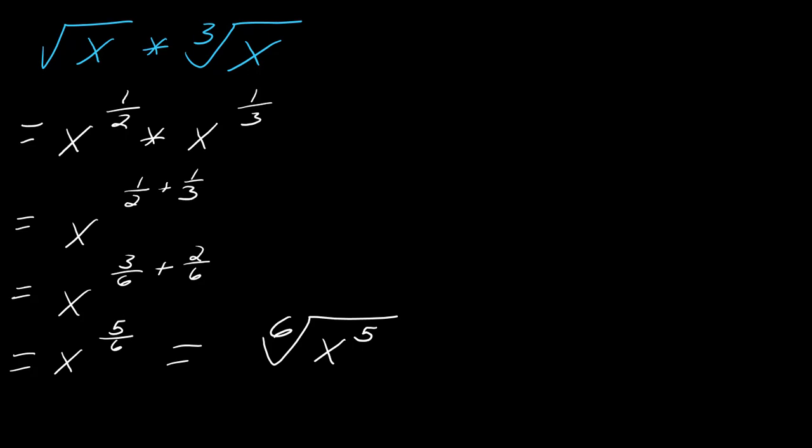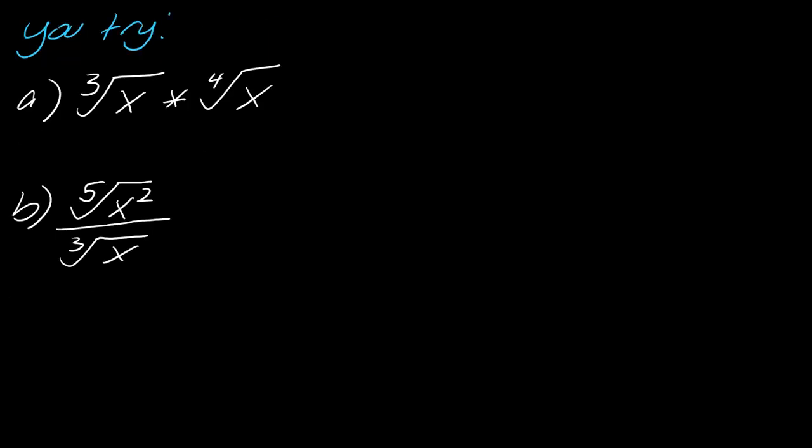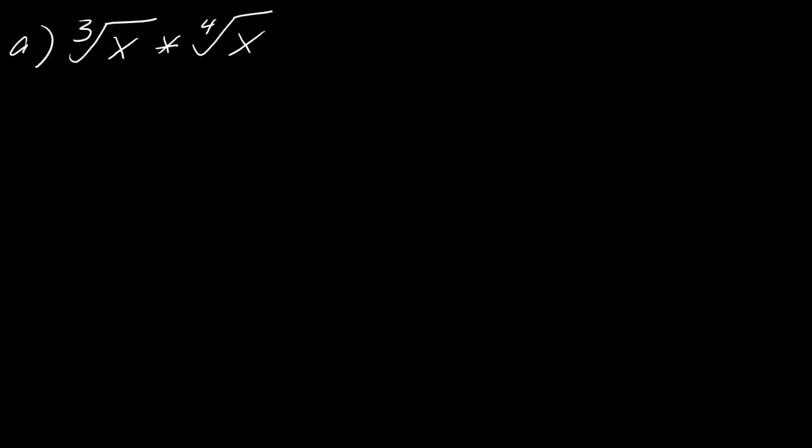Okay, so why don't you go ahead and try these two and then hit play when you're ready. So for this first one, this is going to be x to the 1/3rd times x to the 1/4th. So once again, I need to convert these to having a common denominator. So the common denominator here is 12, so 1/3rd as the new fraction will be 4/12ths. And then 1/4th converted to that with the denominator of 12, that will be 3/12ths. So I get x to the 7/12ths. And so this is kind of a crazy looking radical, but I'd get the 12th root of x to the 7th.